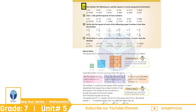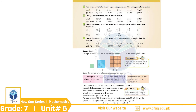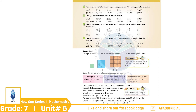Question No. 4: Test whether the following are a perfect square or not by using prime factorization. A. 49 — Prime factorization سے ہمیں پتہ چلا کہ 49 کا perfect square root ہے 7۔ اسی طرح سے اگلے سوال آپ نے خود حل کرنے ہیں۔